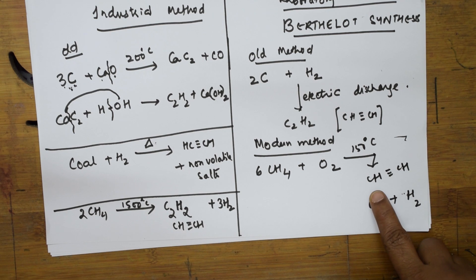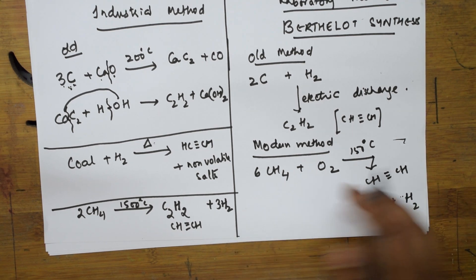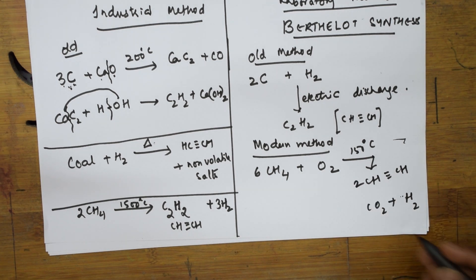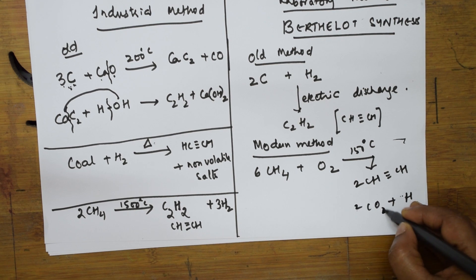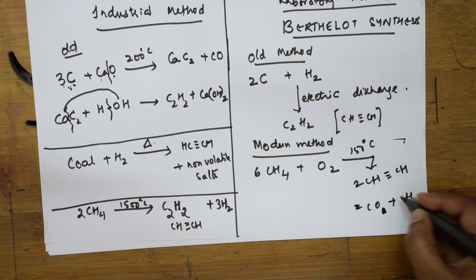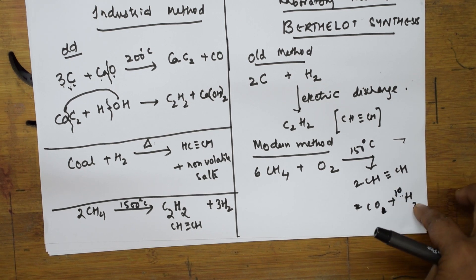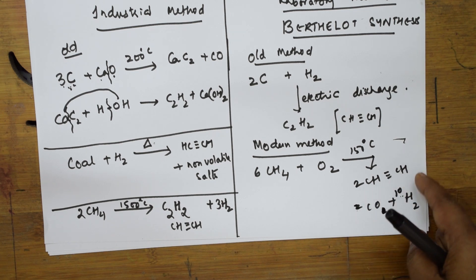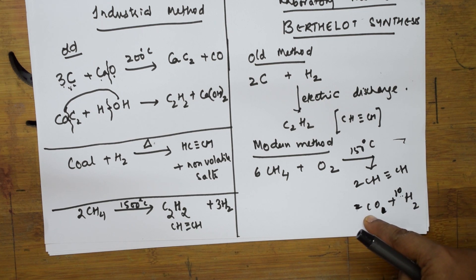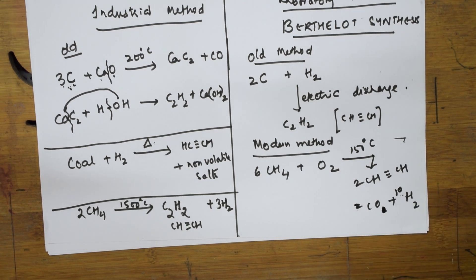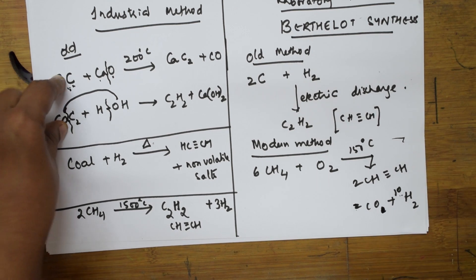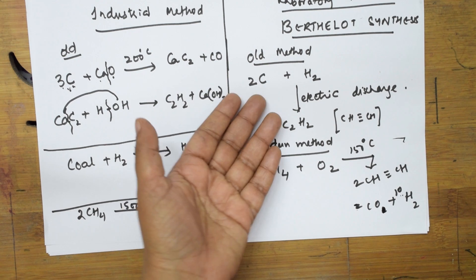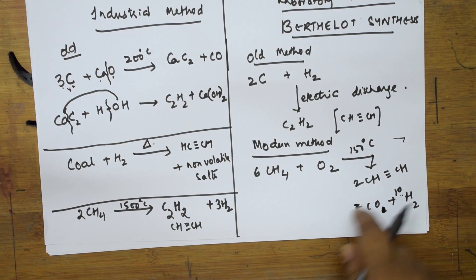From six moles of CH4, one product is acetylene. Balancing the equation with six moles of methane: products include acetylene, two carbon monoxide, and ten hydrogens — balancing to 24 hydrogens on the reactant side. Six oxygens balance with two oxygens each for carbon monoxide and water. So these are the products when methane reacts in limited oxygen at controlled temperature — this is the modern industrial method of preparation.